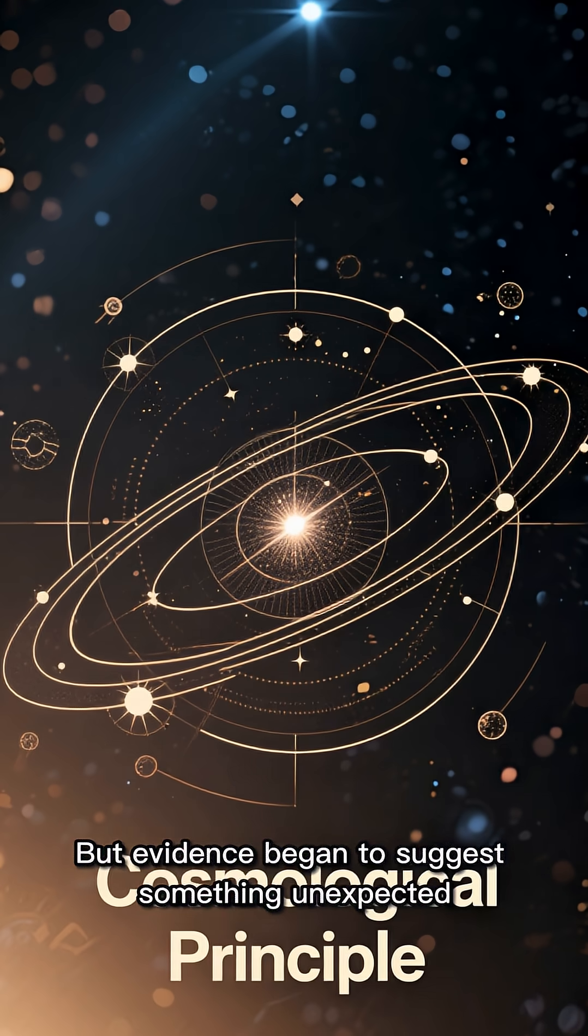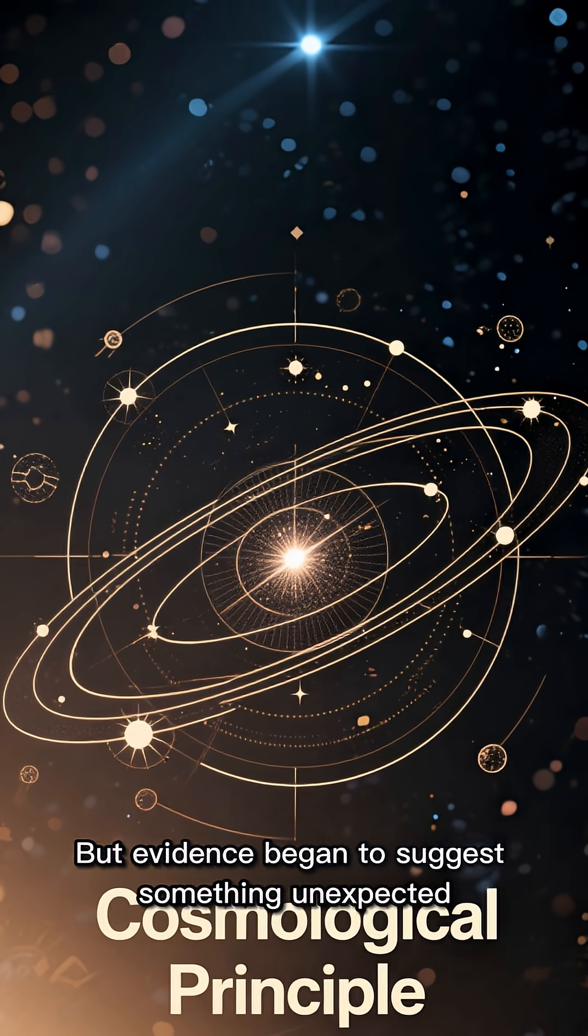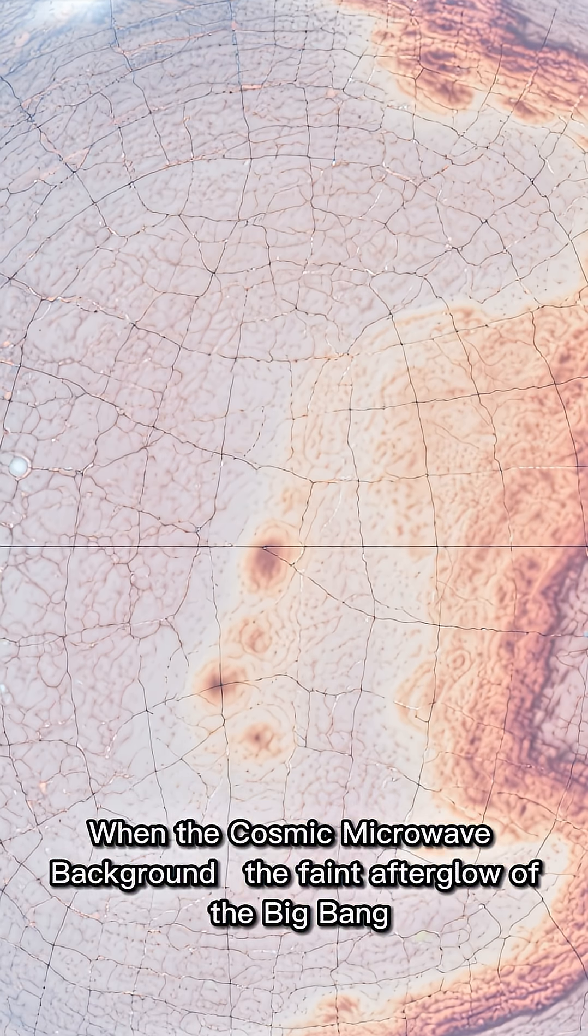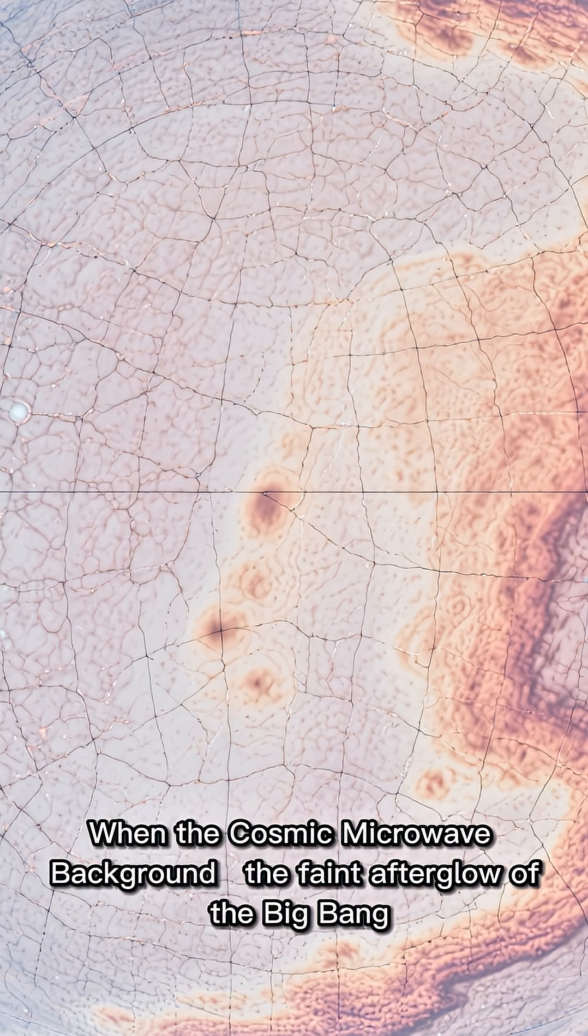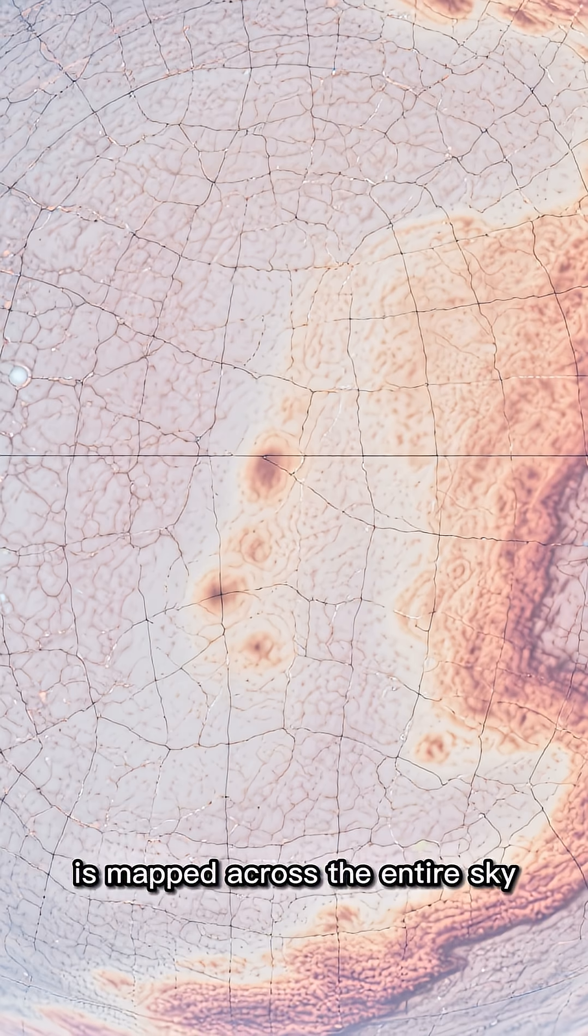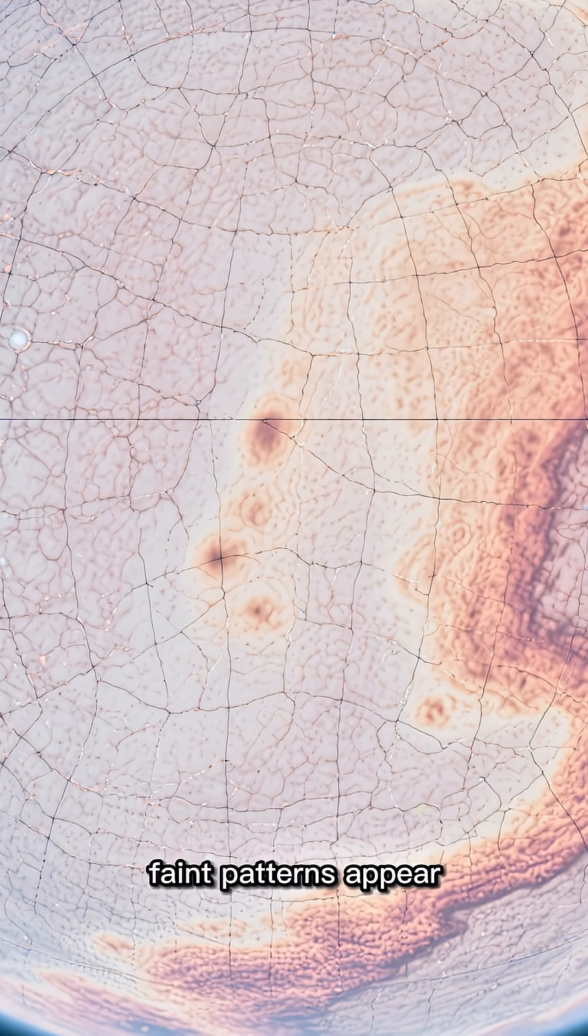But evidence began to suggest something unexpected. When the cosmic microwave background, the faint afterglow of the Big Bang, is mapped across the entire sky, faint patterns appear.